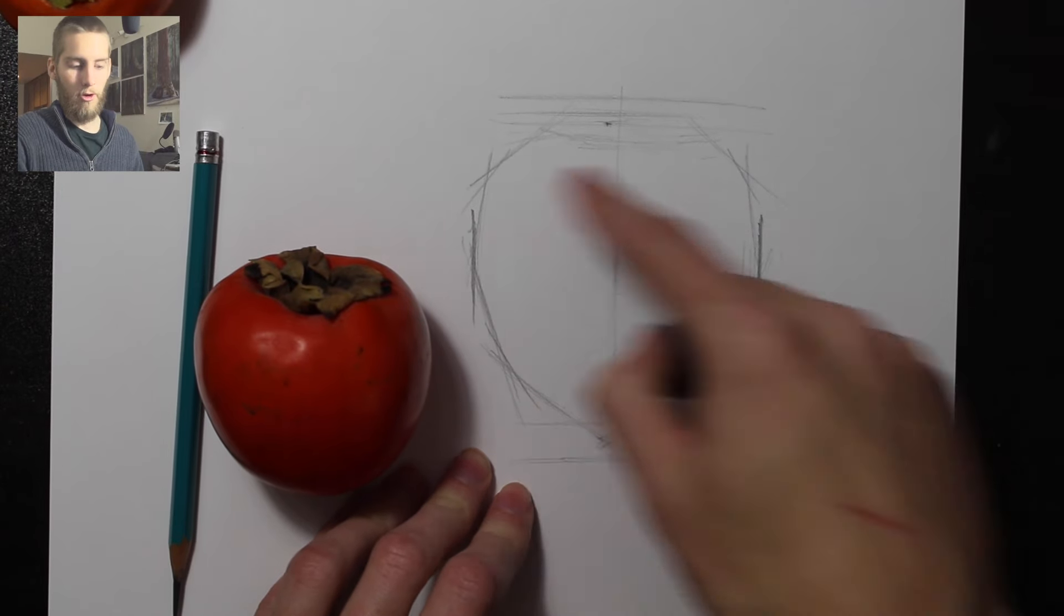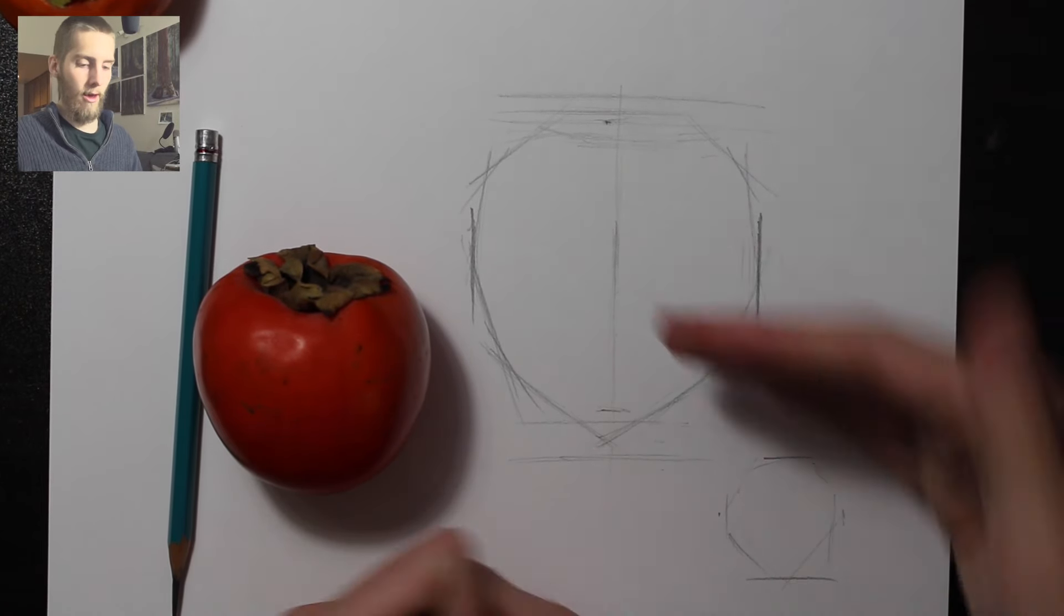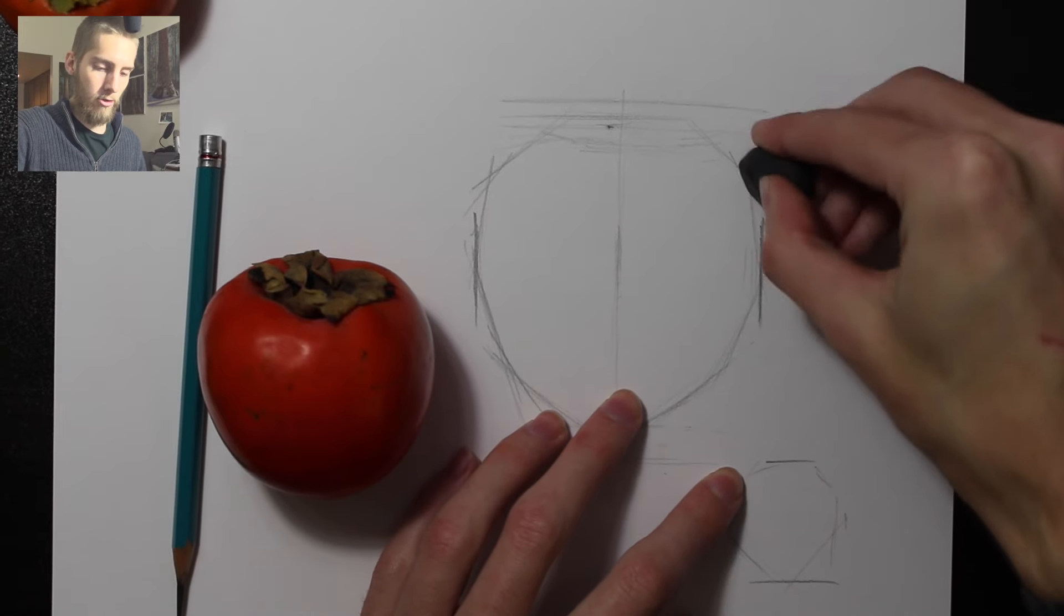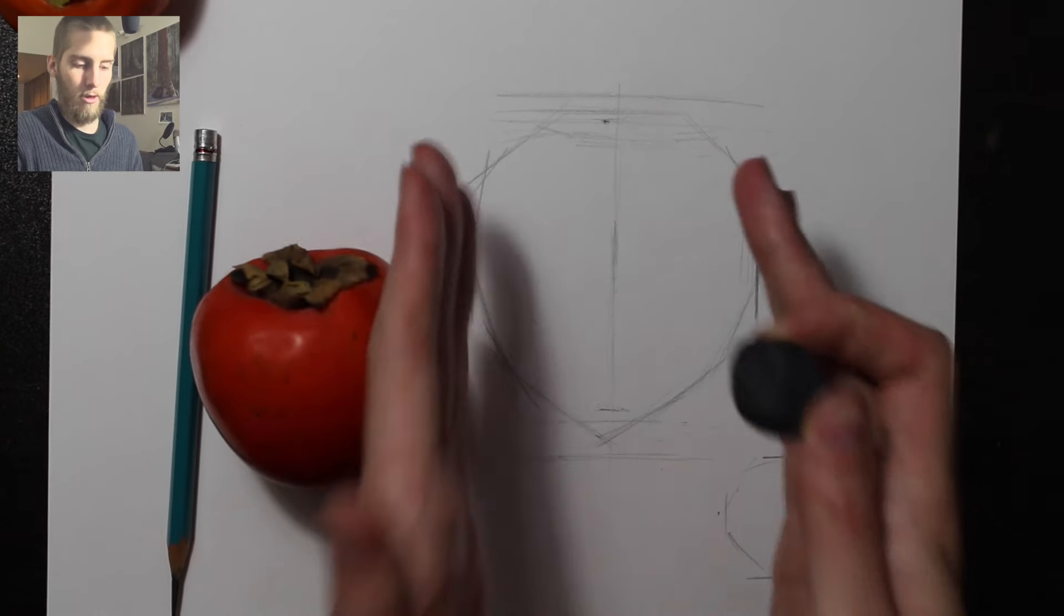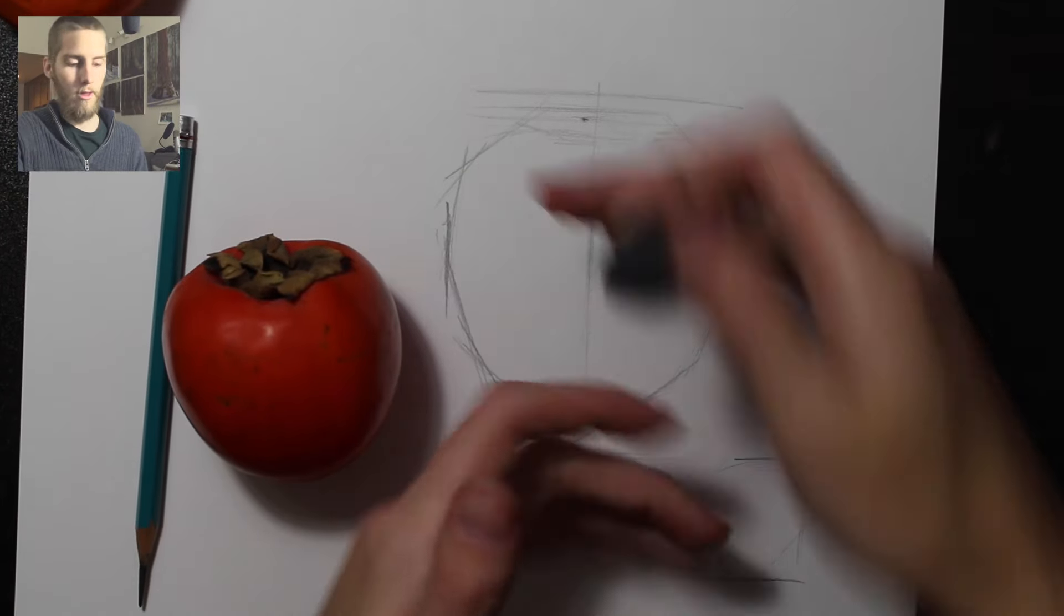You'll see that you'll start creating these curved lines from straight lines and you'll be able to block in things a lot better and judge the proportions a lot better by keeping these two lines in place and only moving the top or bottom.